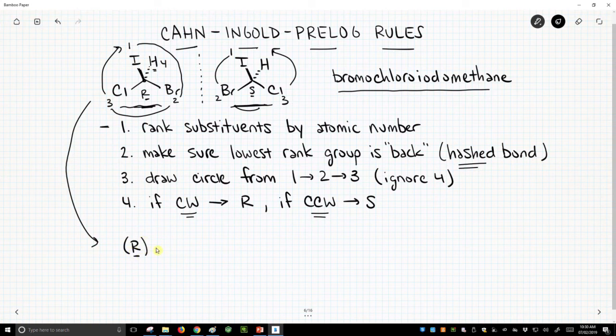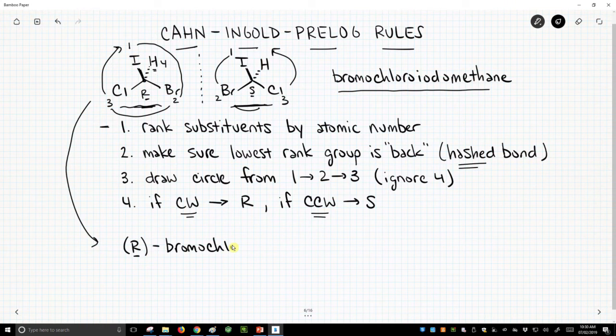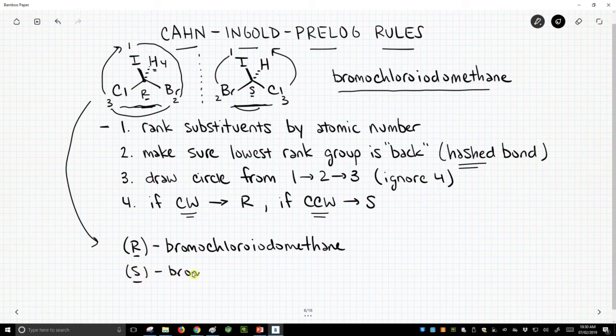R is italicized, so we're going to underline it. It's R-bromo-chloro-iodomethane. How would we name the other structure? We would call that S-bromo-chloro-iodomethane.